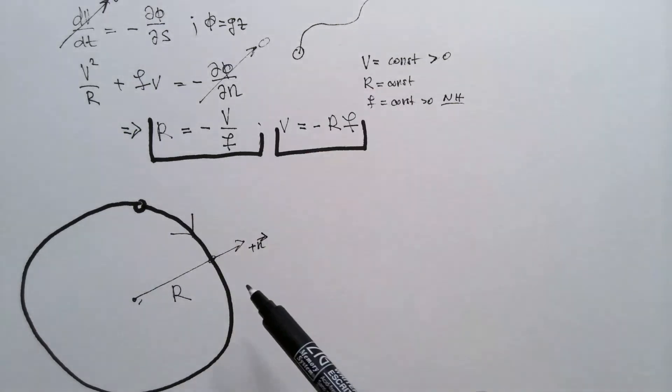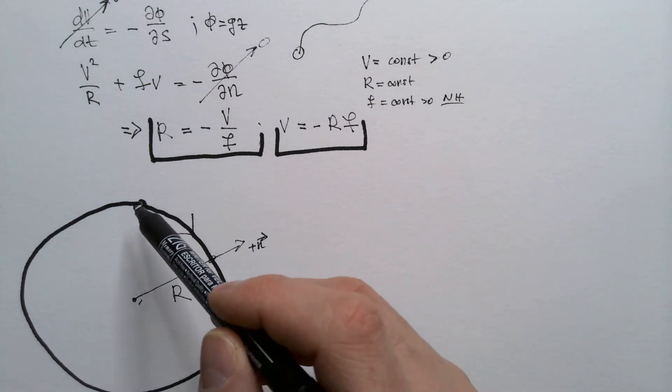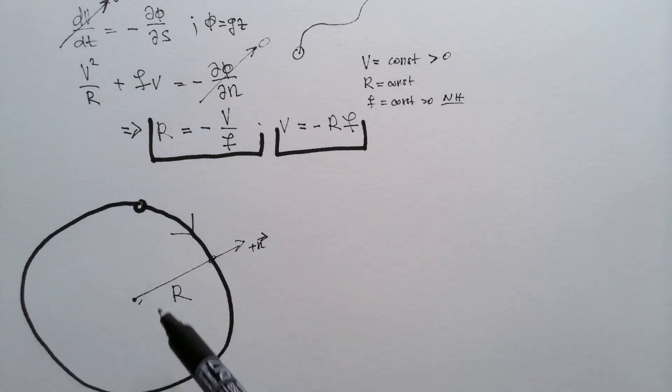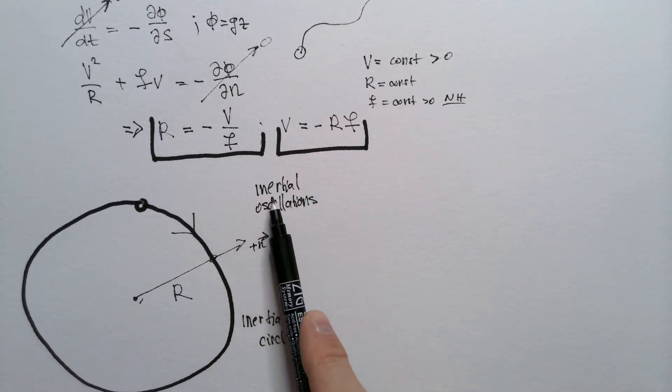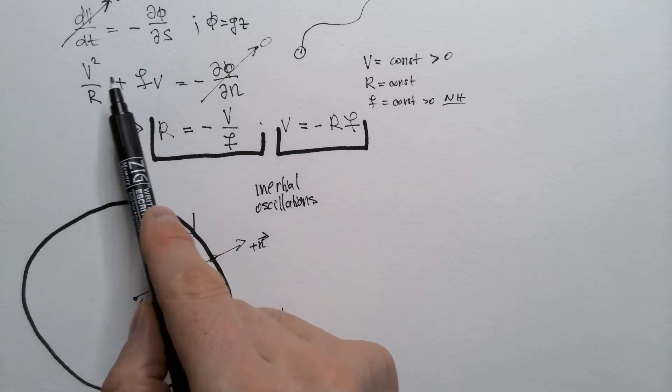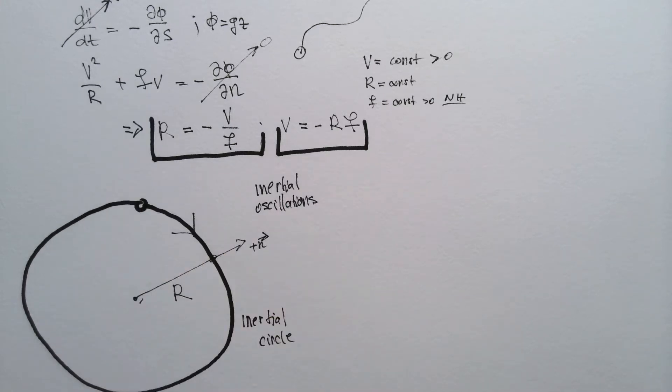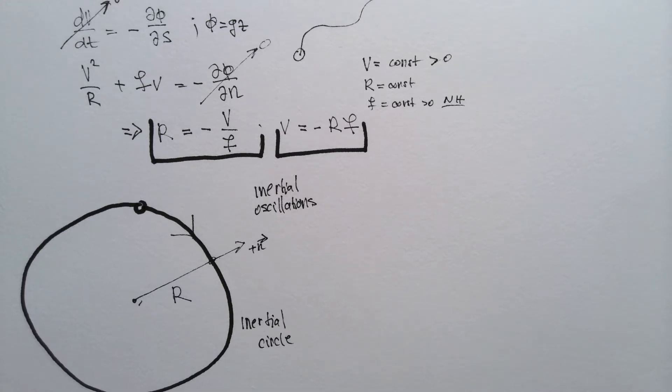So, in the absence of all other forces, namely pressure gradient force and friction, this parcel of air will go forever in this circle. And this circle is called inertial circle. And these oscillations are called inertial oscillations. Why is it called inertial oscillations? I already described it because these two forces are the consequence of inertia of the fluid. Now, this shouldn't be confused with the absolute inertial motion in the universe. Absolute inertial motion is the absence of all forces.